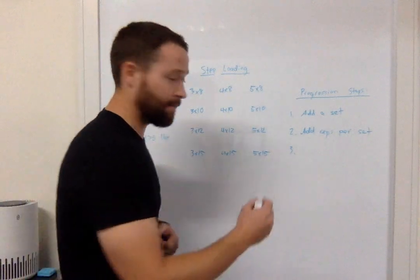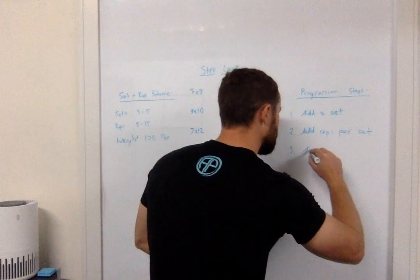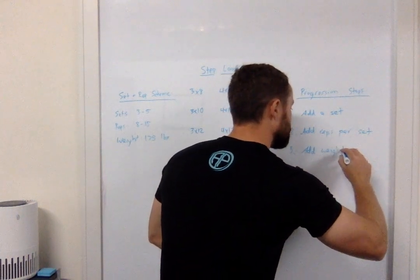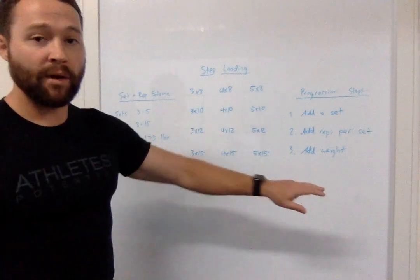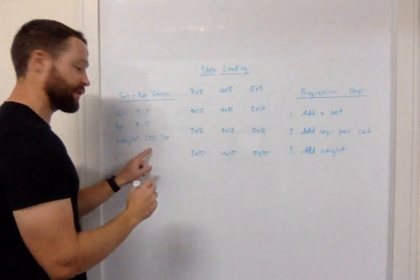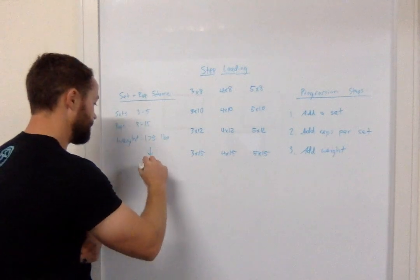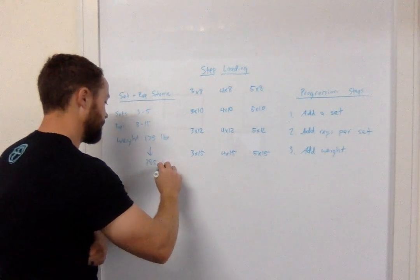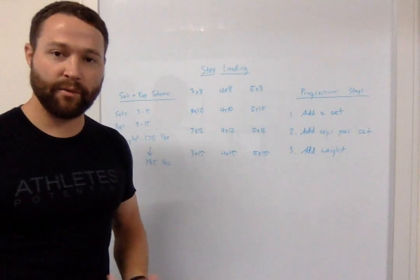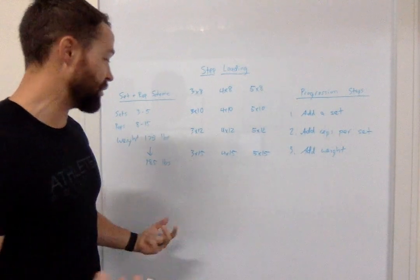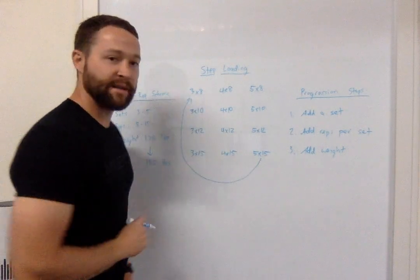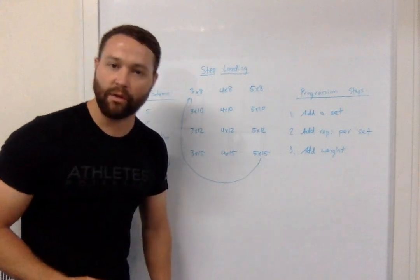So that's our third and final step is we're going to add weight. Now once we add weight, say we add weight and we take this squat up to 185. Now once we add weight our process is going to completely start over with our set rep scheme. So with the new weight all we're going to do is go right back up here to our three sets of eight and repeat the process all over again.